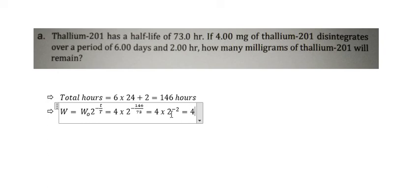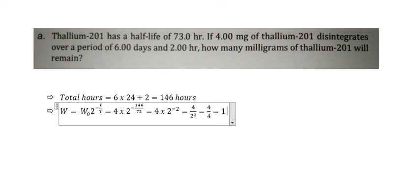We know that 2 power minus 2 can be written as 4 over 2 power 2, which equals 4 over 4, which equals 1. This gives us 1 mg.